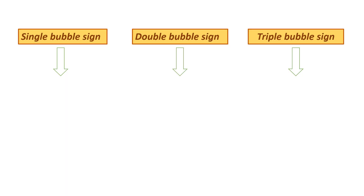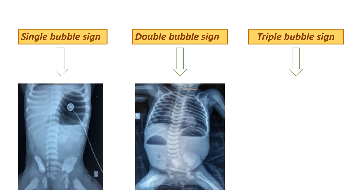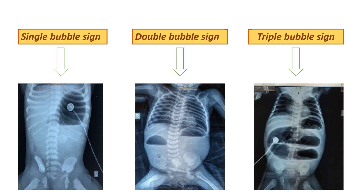To summarize these three characteristic signs: single bubble sign for pyloric stenosis, double bubble sign whenever there is duodenal atresia or obstruction at the level of the duodenum, and triple bubble sign whenever there is jejunal atresia.